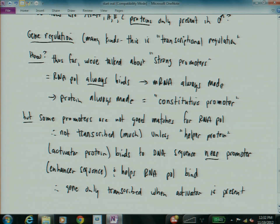But some promoters are not good matches for RNA polymerase. Therefore, they're not transcribed much, if at all, unless a helper protein, which goes by the more formal name an activator protein, binds to a DNA sequence near the promoter. And this DNA sequence is called an enhancer sequence and helps RNA polymerase find. Therefore, the gene is only transcribed when the activator is present. So this is the secret of how you're a he or a she. We all have the genes for being both he and she. In this particular case, they were turned on all the time, we would all be he's. So there must be something funny about the promoters for those genes so that they don't always work.